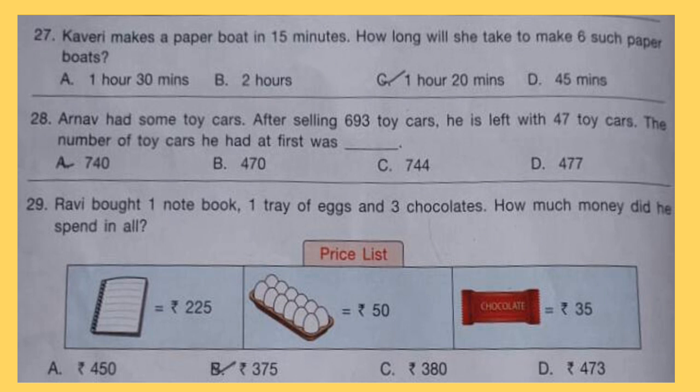Question 29: Ravi bought 1 notebook, 1 tray of eggs and 3 chocolates. How much money did he spend in all?